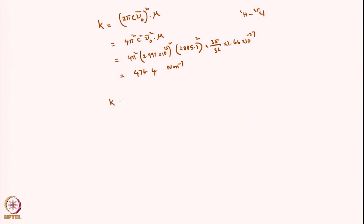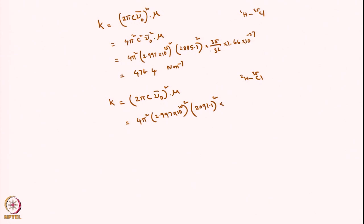Similarly, for DCl-35, k = 4π² c² ν̃0² μ, but now ν̃0 = 2091.1 cm⁻¹ and the reduced mass changes. For DCl, μ = (2×35)/(2+35) × 1.66 × 10⁻²⁷ kg = (70/37) × 1.66 × 10⁻²⁷ kg. Solving this gives k = 486.4 N/m.